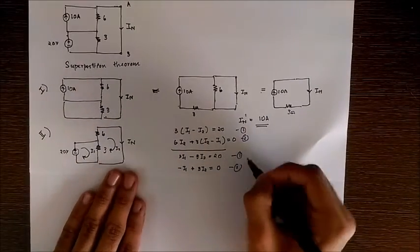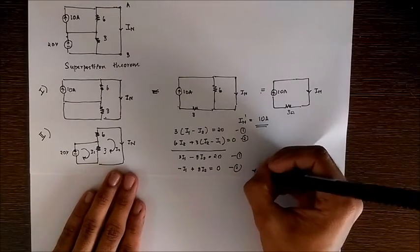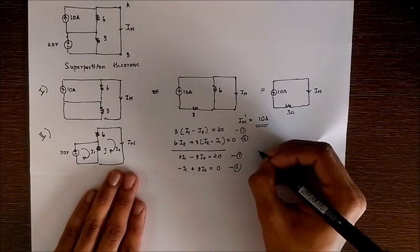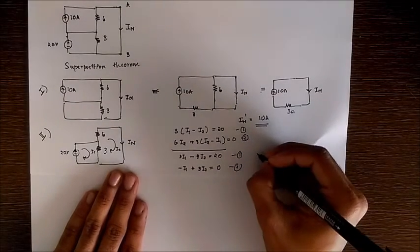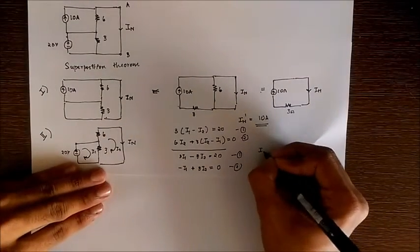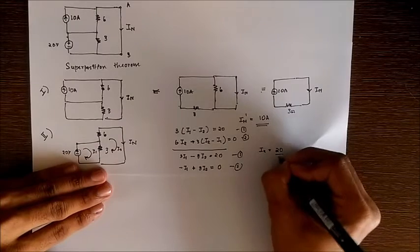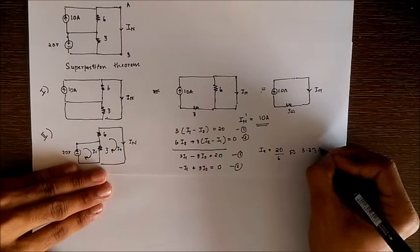I got the simplified forms like this and on substituting equation 2 in 1 and making equation 1 in terms of I2, we get the value of I2 as 20 by 6 which can be approximated to 3.33 Amperes.